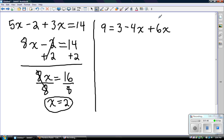Okay, now that you guys have tried this example, we're going to work through it together. So on the left-hand side, we have 9 equals 3 minus 4x plus 6x. The first thing we have to ask ourselves is what are our like terms? We have a negative 4x and a positive 6x that we have to combine together first.